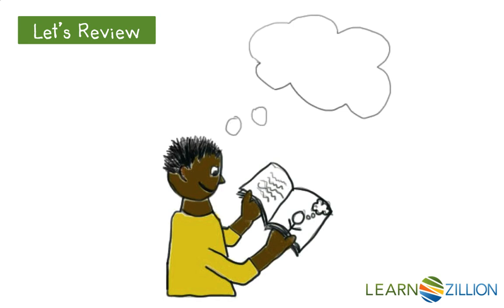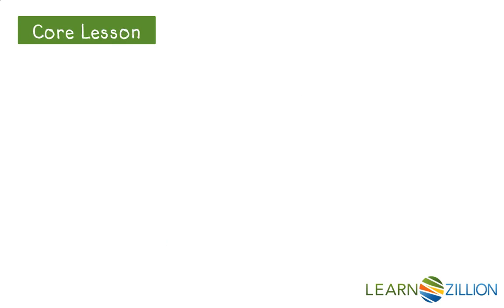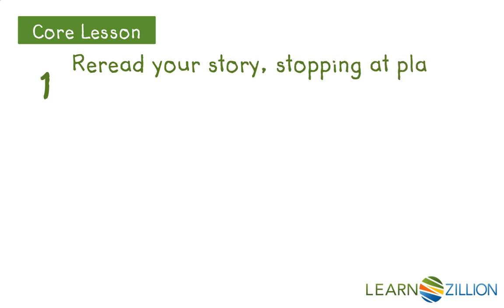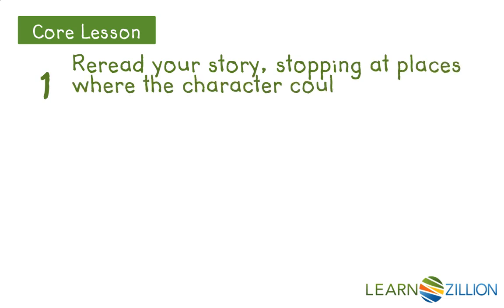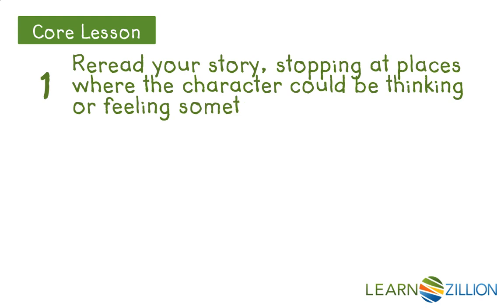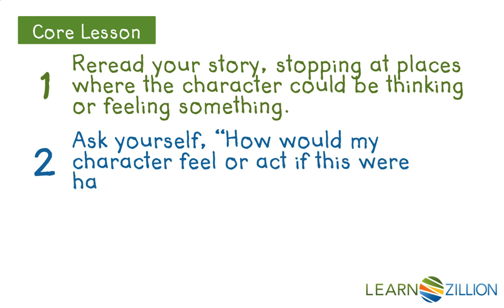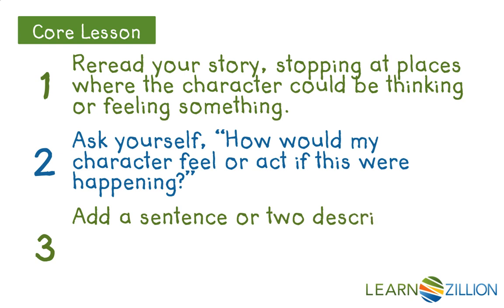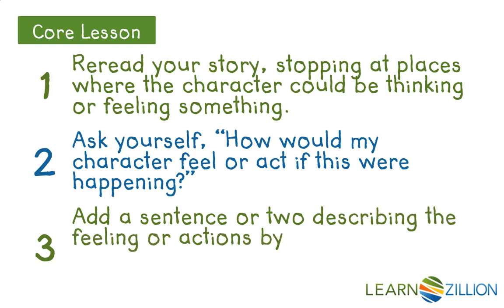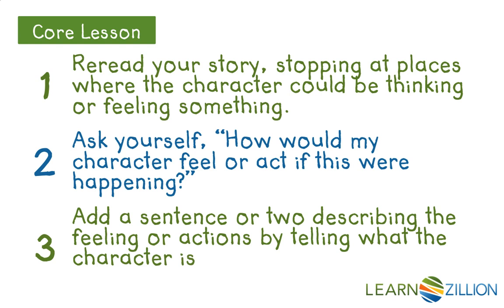Let's review. When we use descriptive details to show what the characters are thinking and feeling, this helps the reader understand their point of view. Here are the steps we'll use. 1. Reread your story, stopping at places where the character could be thinking or feeling something. 2. Ask yourself, how would my character feel or act if this were happening? 3. Add a sentence or two describing the feeling or actions by telling what the character is thinking or what their face and body are doing.